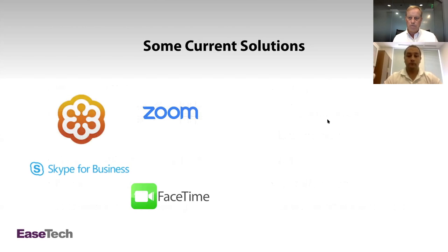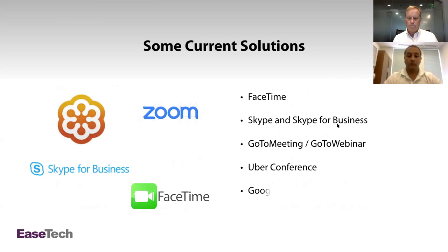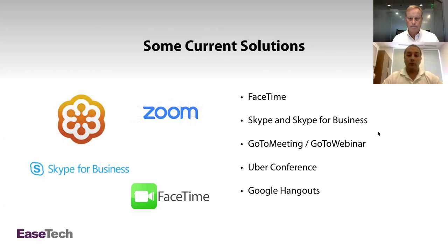Let's talk about some of the current solutions. FaceTime and Google Hangouts are pretty ubiquitous — everybody has them built into either their Android or iPhone. Hangouts can actually go between multiple platforms, where FaceTime is iOS only. There's Skype and Skype for Business, which have different use cases. Uber Conference is one Dan uses personally — it allows on-demand conference calls and screen sharing. Dave has been using GoToWebinar and GoToMeeting for a very long time, and now we're also exploring Zoom.